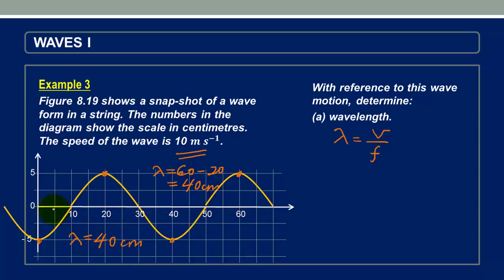Another way of determining wavelength is by considering this point here, this point here, and this other point here. Again it is from 10 to 50. Again we find that the wavelength is 40 centimeters. So we can easily determine the wavelength as 40 centimeters or 0.4 meters.